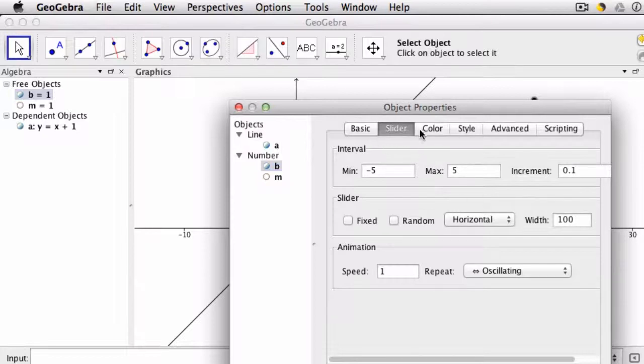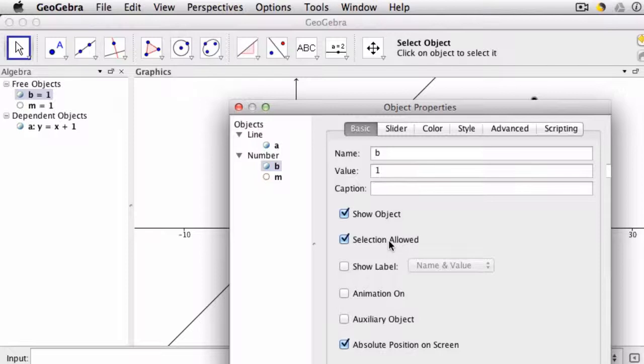Now there's lots of things I can change: the interval and the increment. I'm going to focus mainly on color and all these other things here, but under basic I think it's nice to show the label, include the name and the value, so students know what the slider is actually changing.